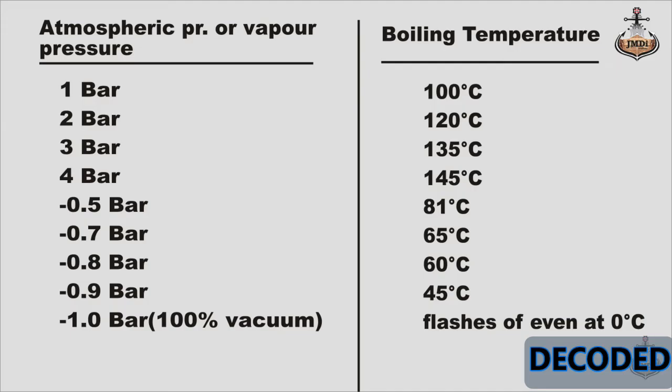Simultaneously, if you reduce the pressure or you create vacuum. So, at gauge pressure, minus 0.5 bar, the boiling point is 81 degree centigrade. At gauge pressure, minus 0.7 bar, boiling point is 65 degree centigrade. At gauge pressure, minus 0.8 bar, boiling point is 60 degree centigrade. At gauge pressure, minus 0.9 bar, boiling point is 45 degree centigrade. And at gauge pressure, minus 1 bar, that is 100 percent vacuum. Water flashes off at any temperature. But it should be above 0 degree centigrade, it should not be ice. Just flashes off.